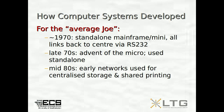Let's begin by thinking about the development of computer systems and networks. For the average person, around about 1970, we would have been thinking about standalone mainframes or mini computers with all the links back to the central computer via an RS-232 communications link. By the late 70s, the micro had appeared and these were used standalone. There was no concept of networking at that point. But by the mid-80s, early networks were already being used for centralised storage and shared printing particularly.